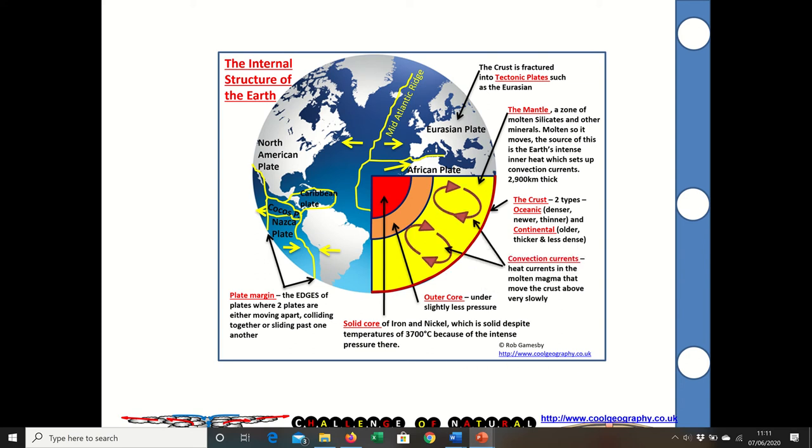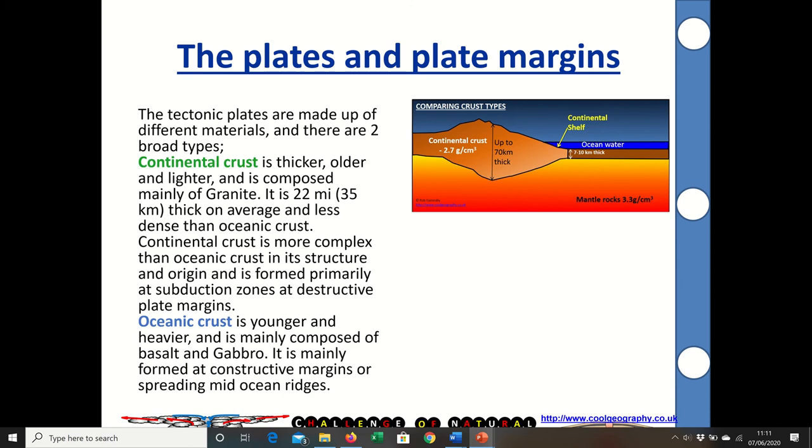The tectonic plates are made up of different materials, there's two broad types. Here you can see the continental crust, it's a little bit lighter and it's up to 70 kilometers thick but it's 22 miles thick on average and is made of granite. It's older because it tends not to be destroyed.